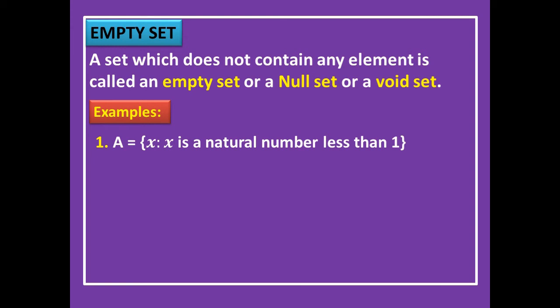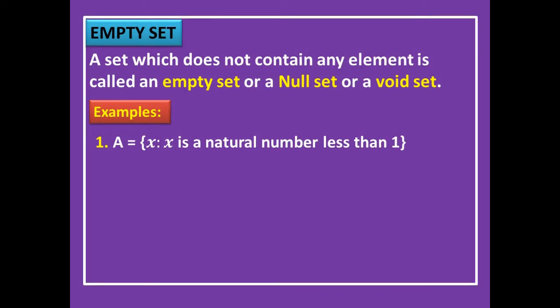A = {x : x is a natural number less than 1}. Natural numbers are 1, 2, 3, 4, and so on. Is there any natural number which is less than 1? No. The least natural number is 1, so there is no element less than 1 in this set. Therefore this is an example of an empty set.